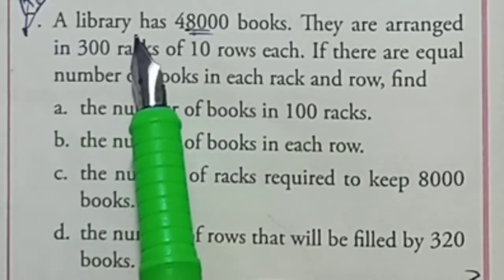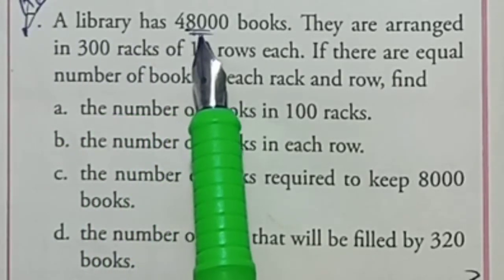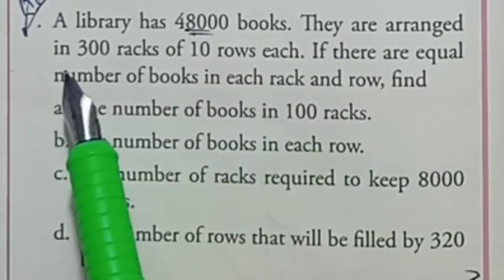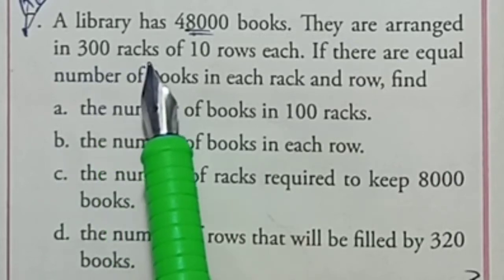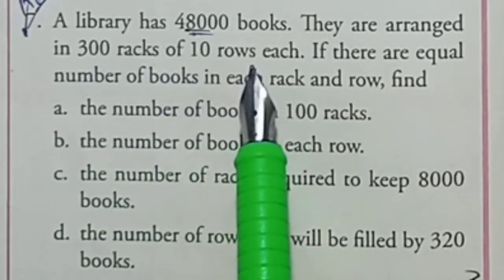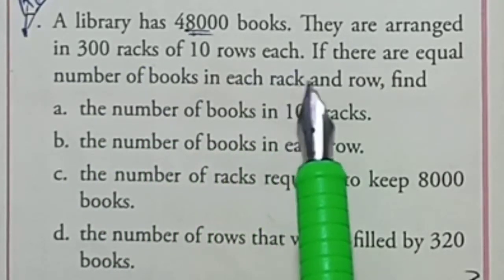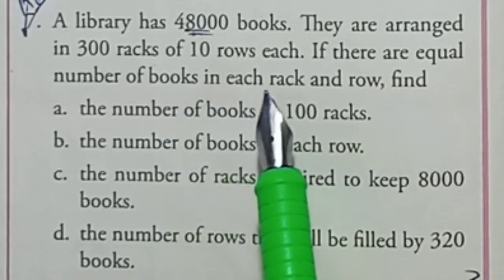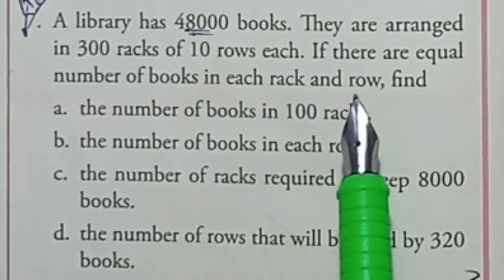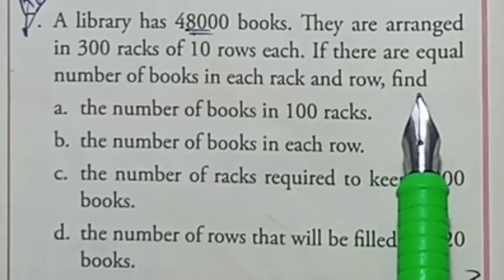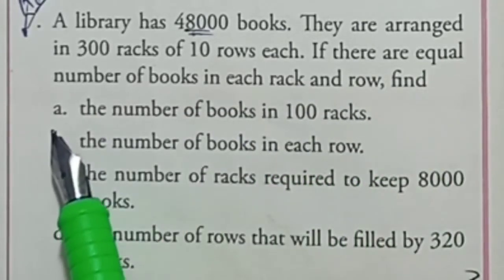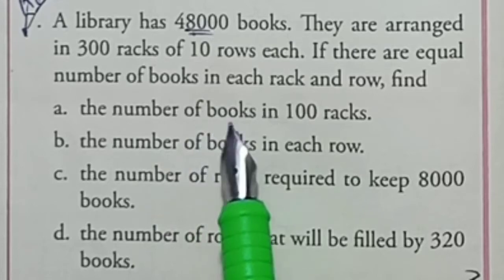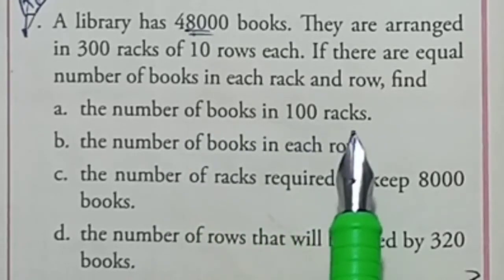Question 7. A library has 48,000 books. They are arranged in 300 racks of 10 rows each. If there are equal number of books in each rack and row, find question A: the number of books in 100 racks.